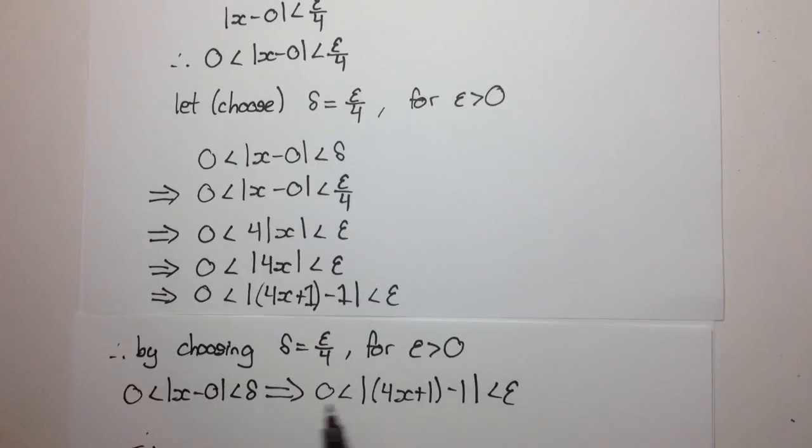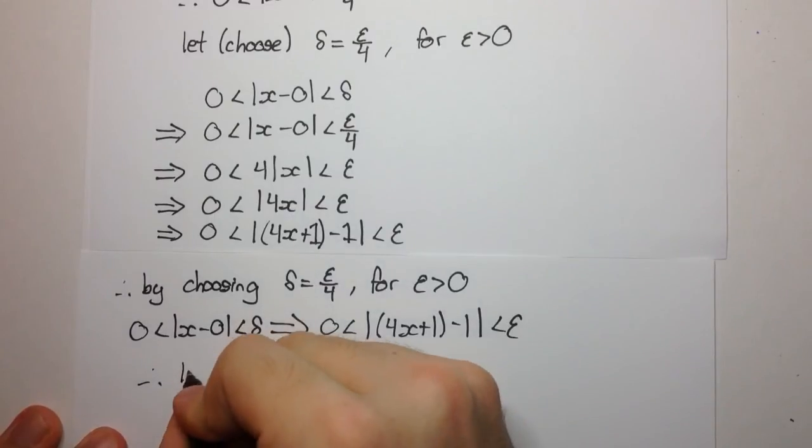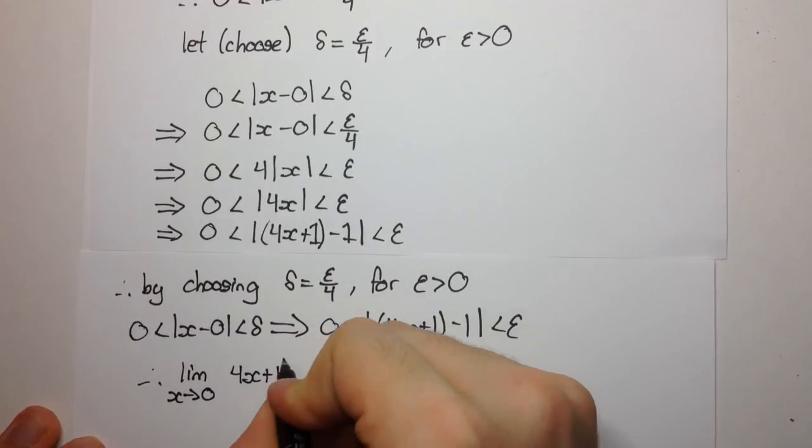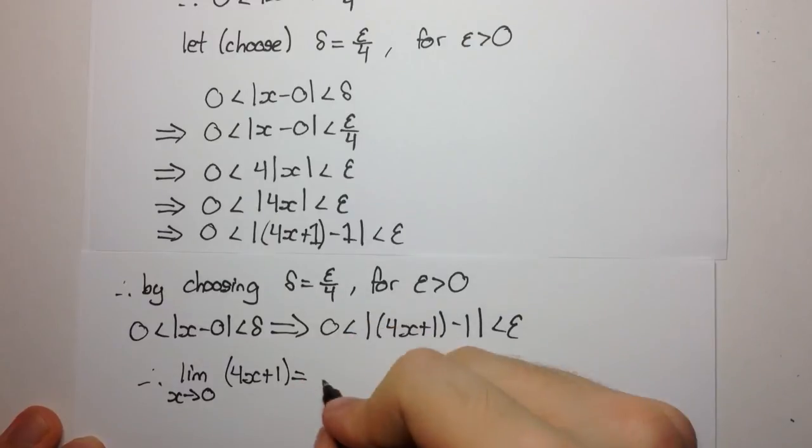And so therefore this is our a, this is our f of x, and this is our l, so we can say therefore the limit as x approaches 0 of the function 4x plus 1 is in fact equal to 1. Ok and that's the end of the question.